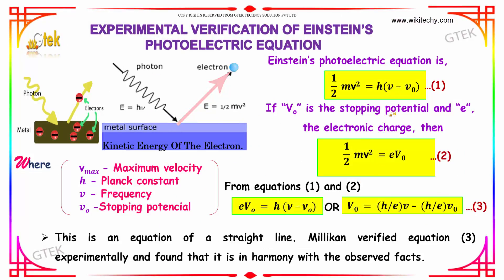So, Einstein's photoelectric equation is half mv square is equal to h into nu minus nu nought. If v zero is the stopping potential and E the electronic charge, then half mv square is equal to E into v zero. Equating these equations, we will be getting ev0 is equal to h into nu minus nu nought. So, v zero is equal to h divided by E into nu minus h divided by E into nu nought.